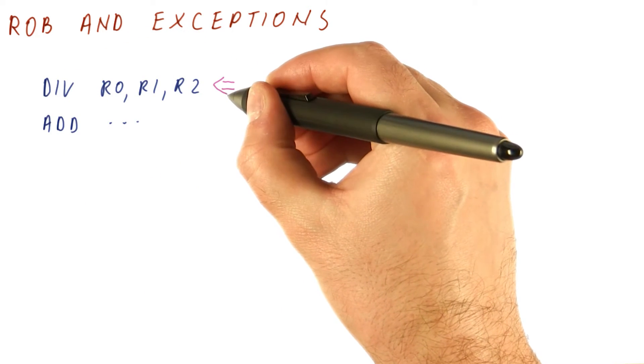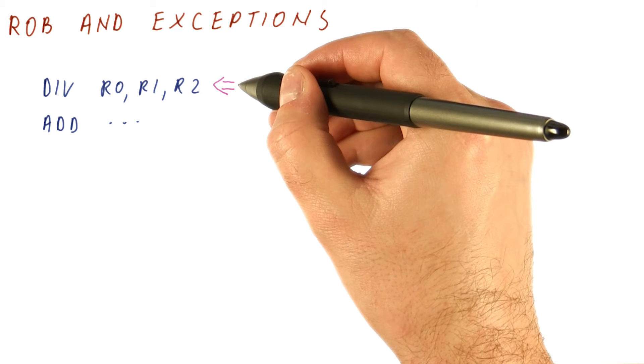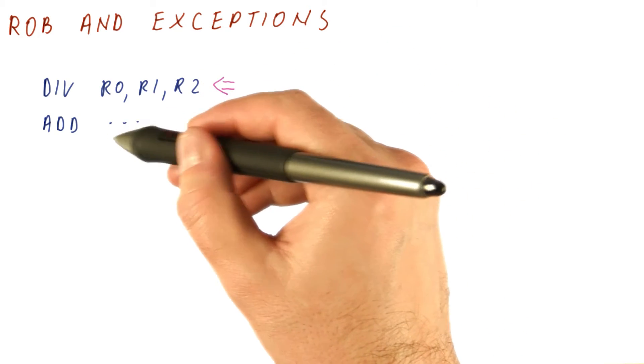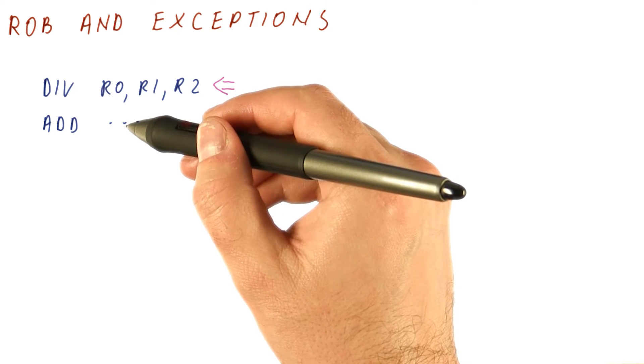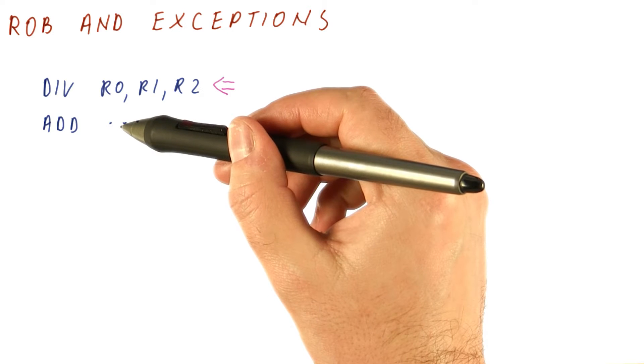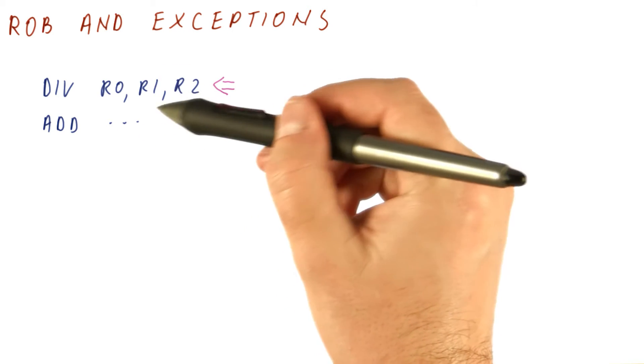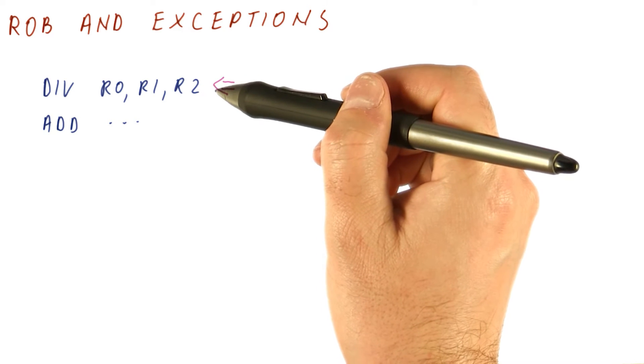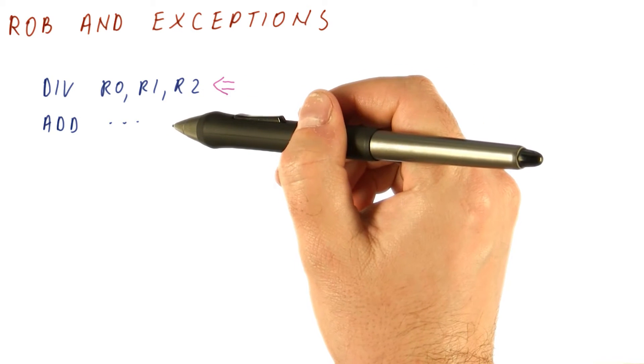One problem occurs because this divide can be delayed and realize that R2 is zero much later, while the add, for example, can be quick and be done. With Tomasulo's algorithm, the add would deposit the result to the destination register long before the divide had a chance to determine that R2 is zero, and that we should have jumped to the exception handler and never executed the add.